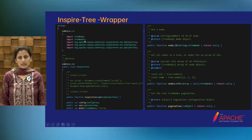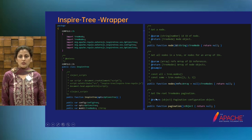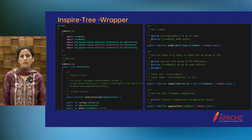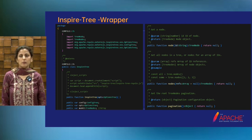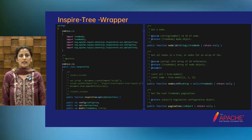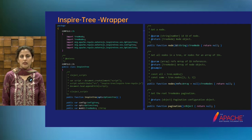We can build interactive tree structures that allow users to expand, collapse, and explore nested data effortlessly — whether showcasing theme structures or visualizing product categories. If you see this wrapper class, it has classes for config, options, node, nodes, and pagination. Here are the options for customized appearance — you can tailor the appearance of the tree to match your application's design language. For example, if you are using a certain theme in Jewel, you can also style the InspireTree icons accordingly by modifying the CSS, creating it as a SaaS with a customizable theme.